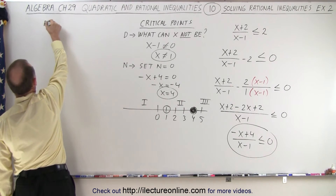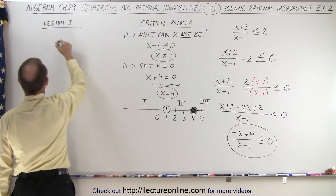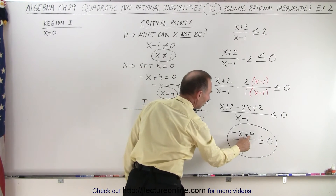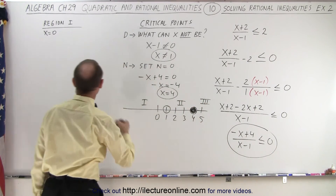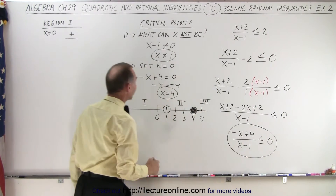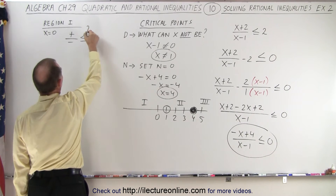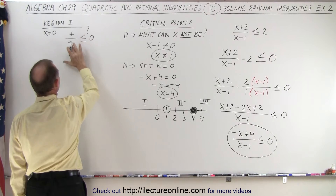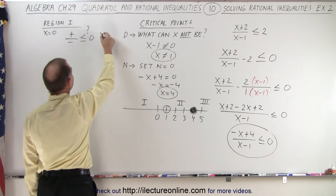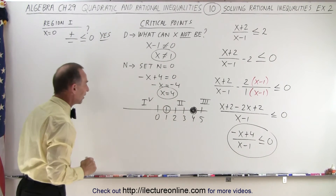For region one, let's pick the representative point x equals zero. When x equals zero, the numerator gives four, which is positive. The denominator gives zero minus one, which is negative. A positive divided by a negative is a negative number, and negative is less than zero — so yes, region one satisfies the inequality.